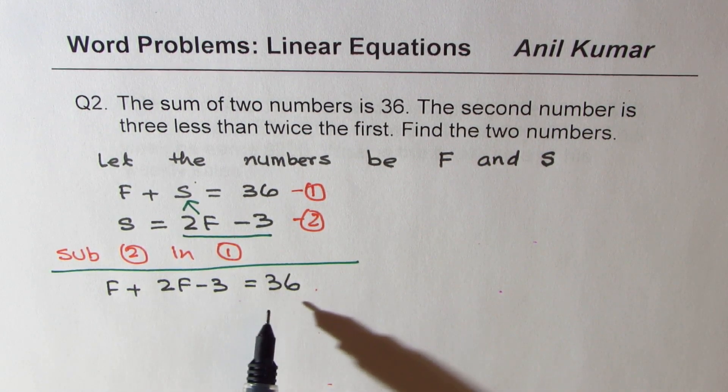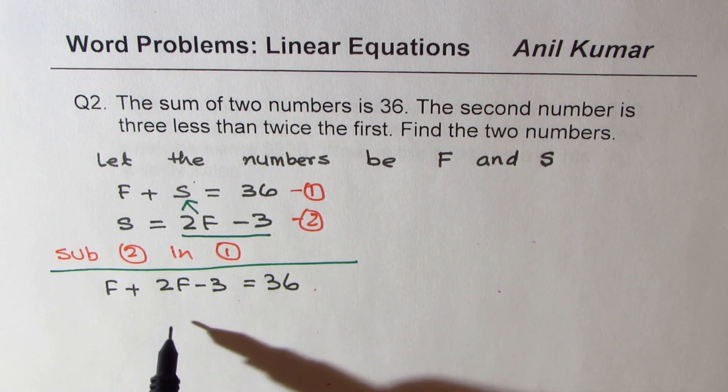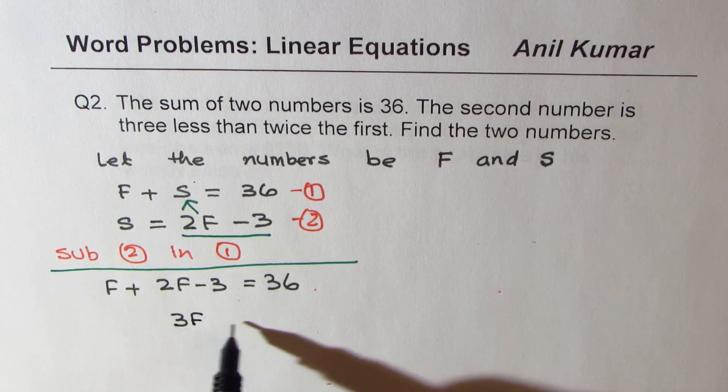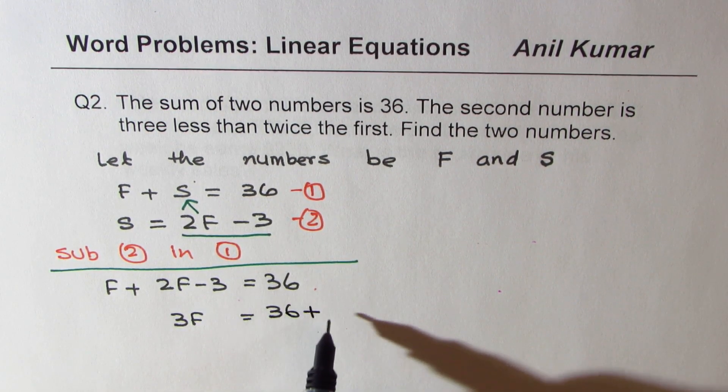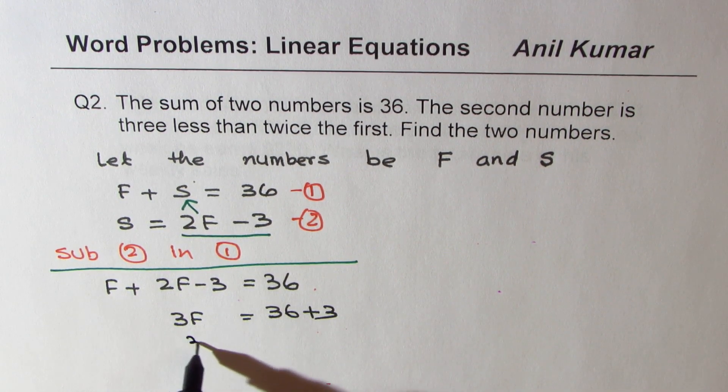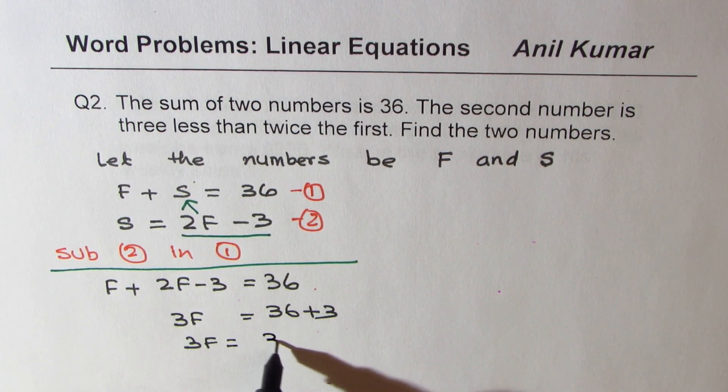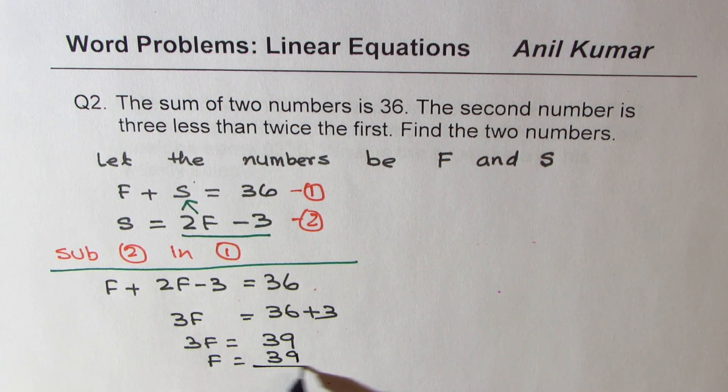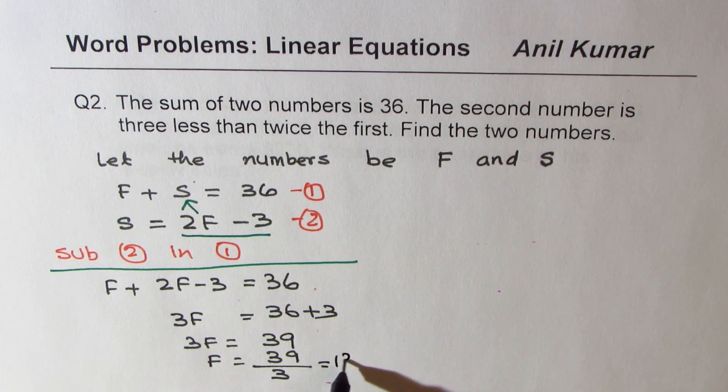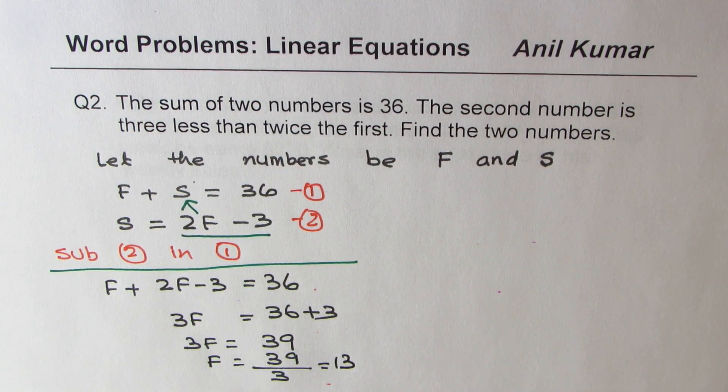F plus 2F is 3F and we can take 3 to the right side, we get 36 plus 3. So we get 3F equals 39. F is 39 divided by 3, which is 13.